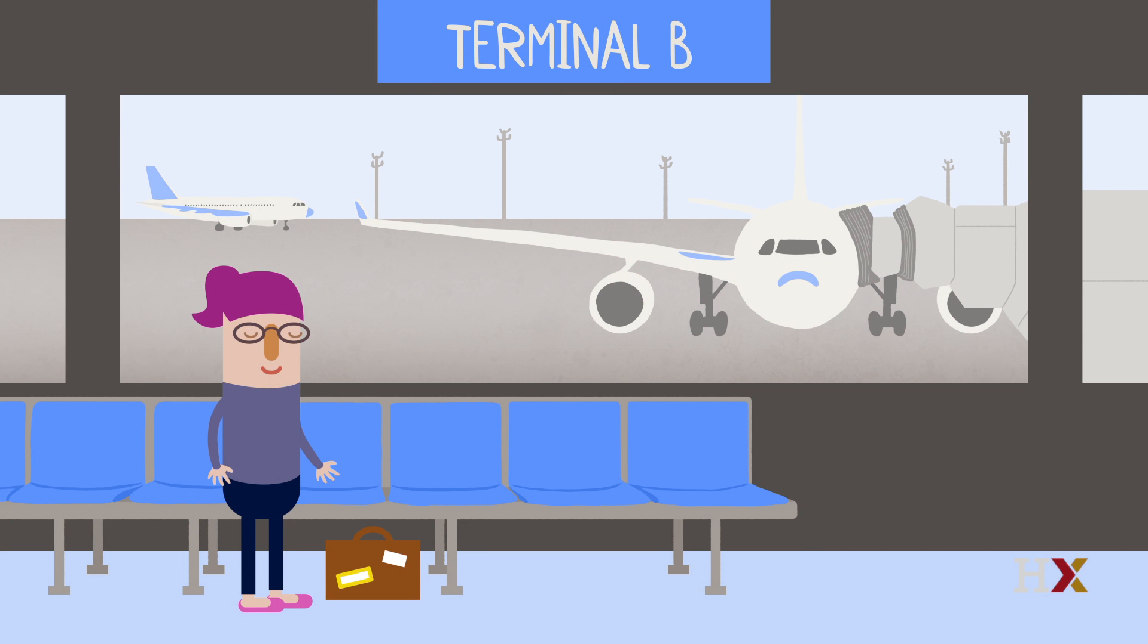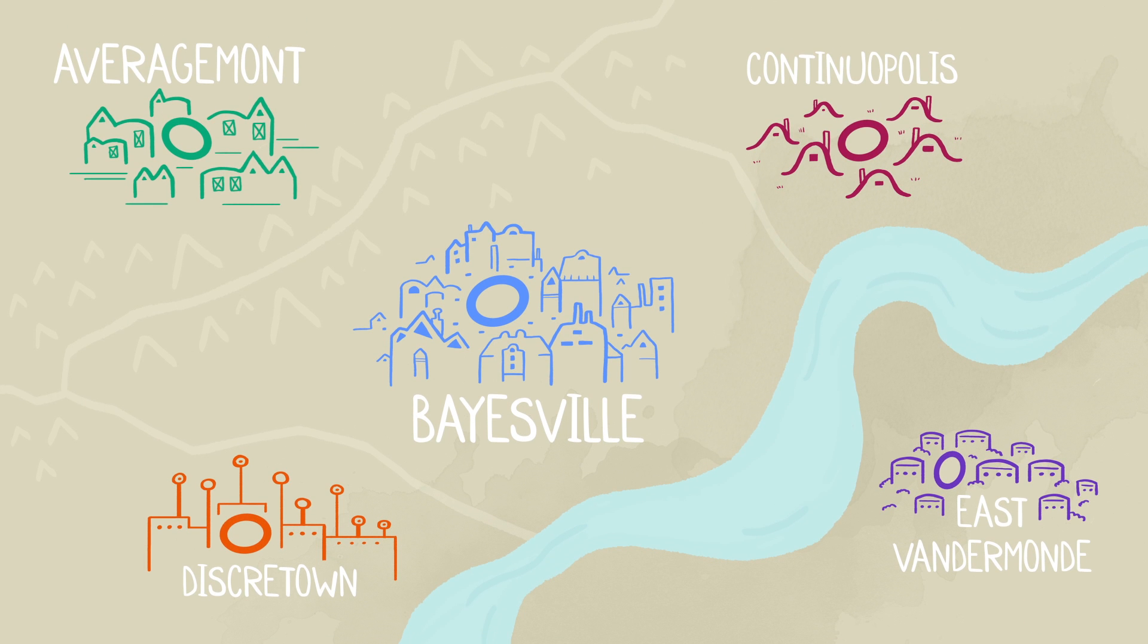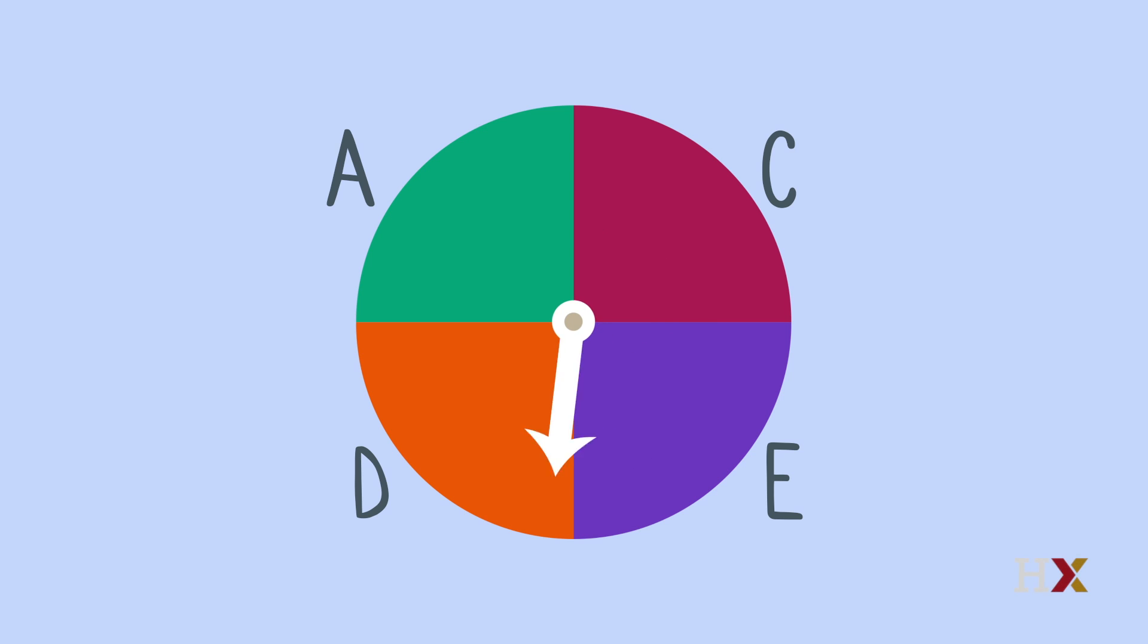Today, Anna is in Baysville. She uses a spinner to pick randomly from all available cities with equal probabilities. Baysville is a major hub and has direct connections to all the other cities. The spinner lands on Averagemont, so that is her next stop.